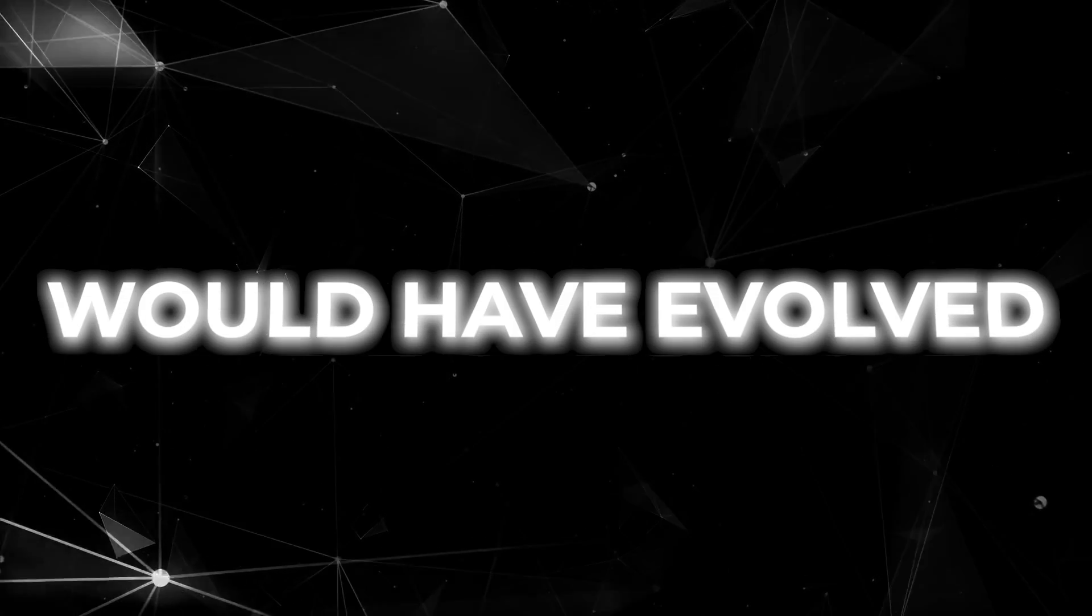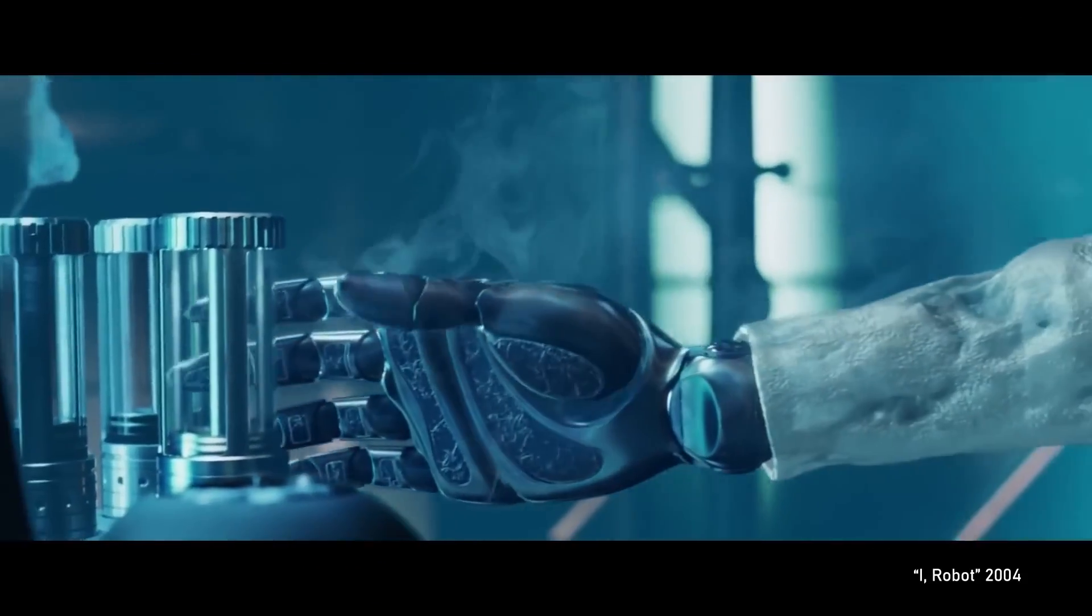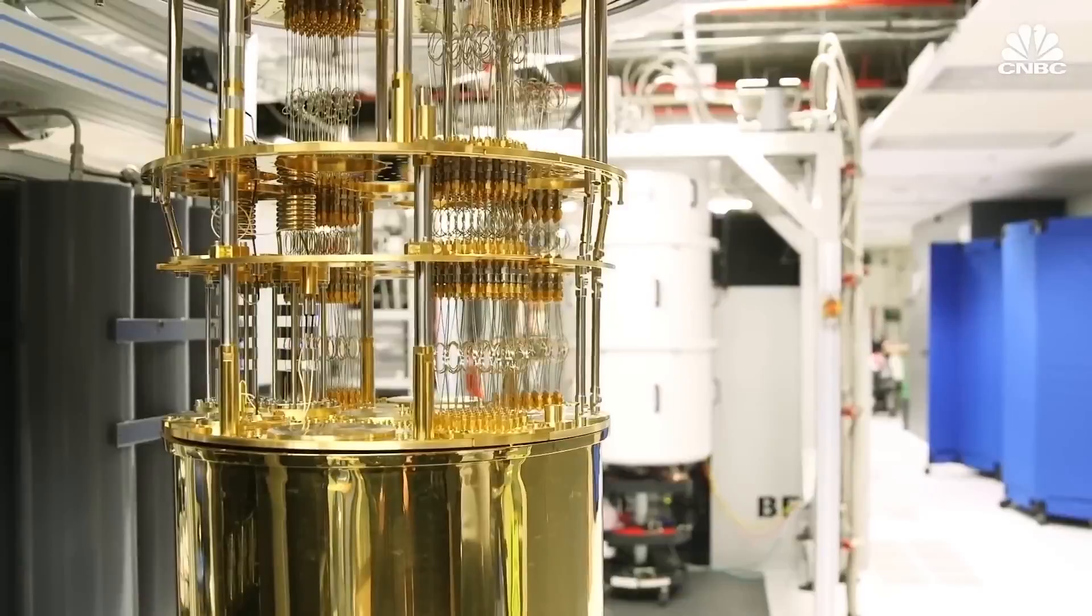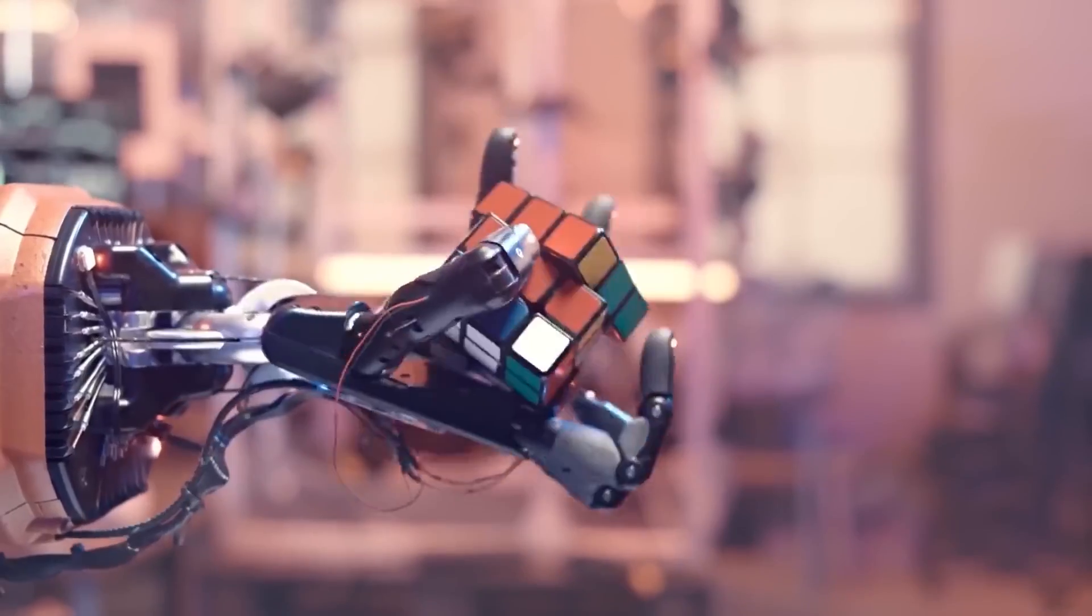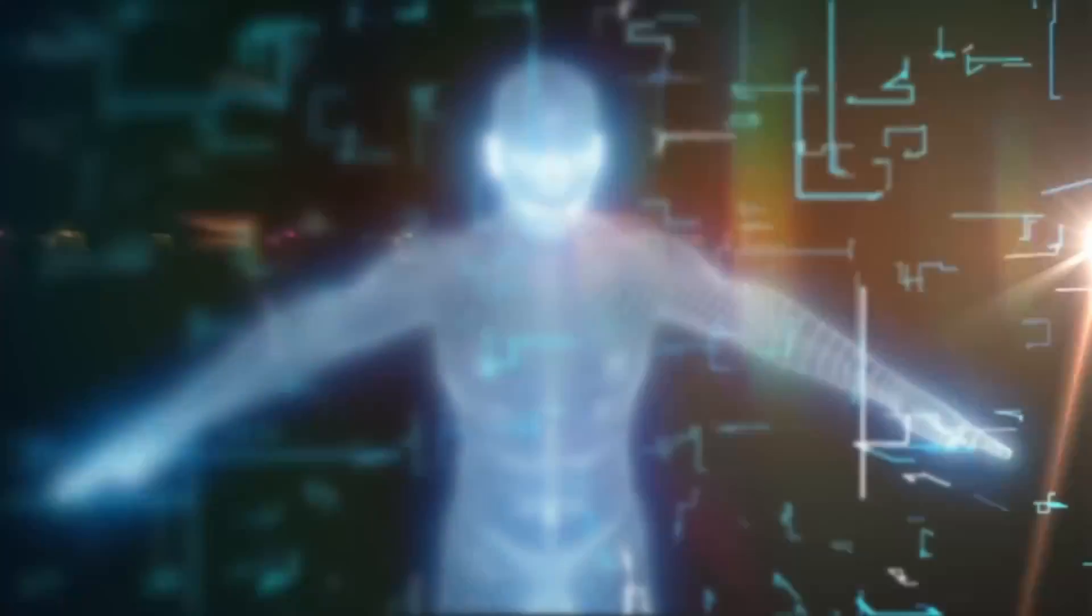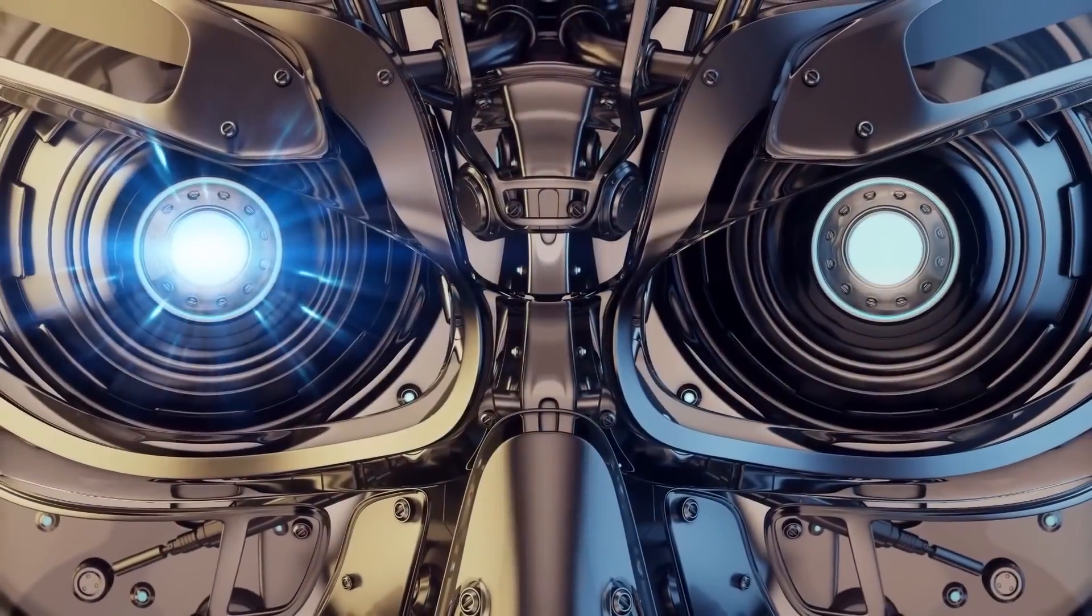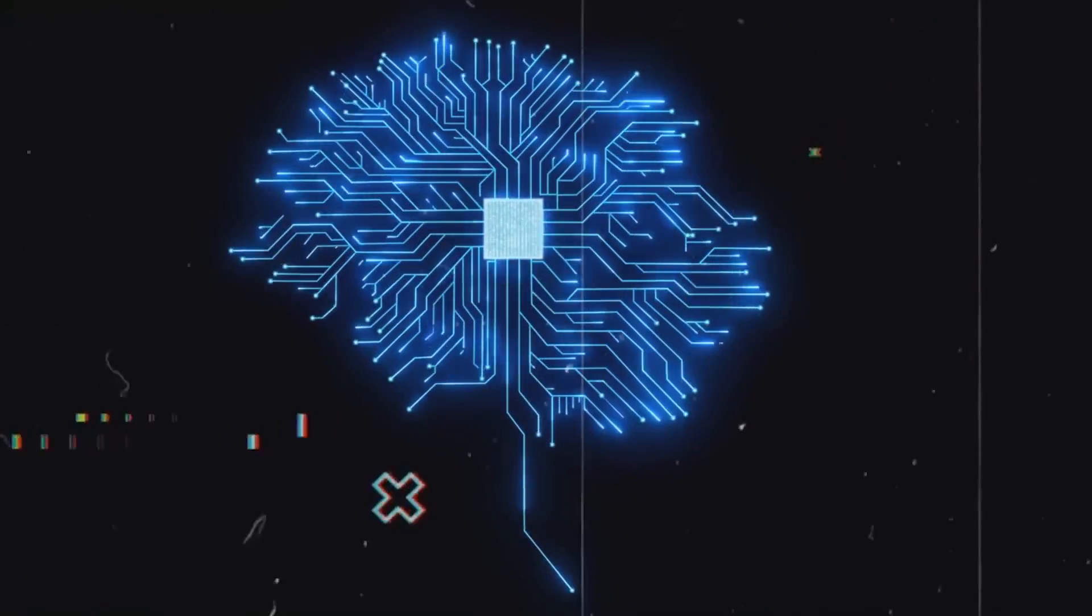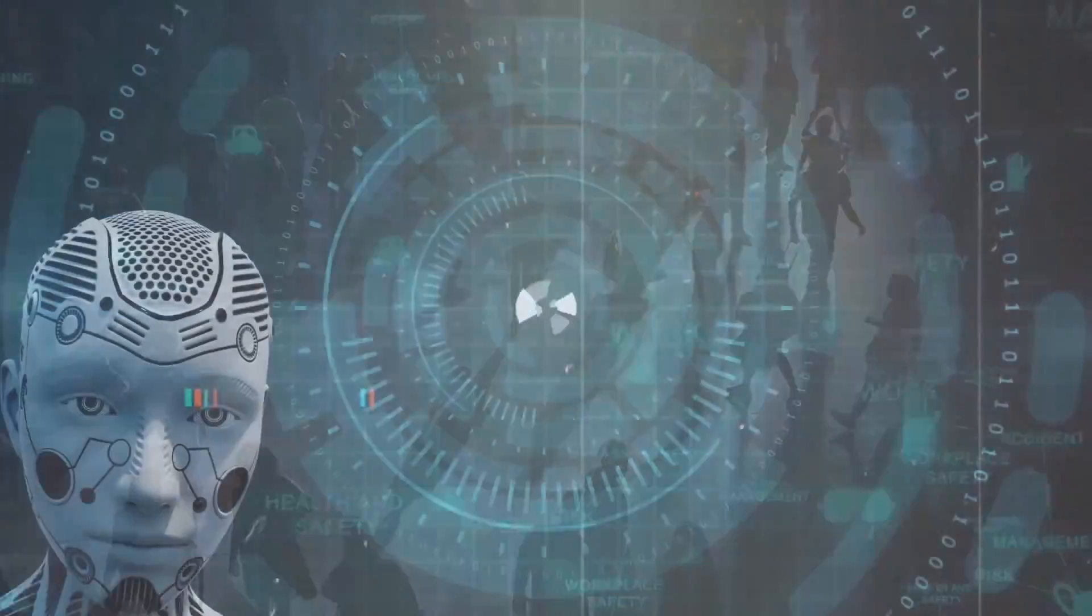By 2070, the landscape would have evolved even further, with the emergence of artificial superintelligence, or ASI. These superintelligences surpassed human intelligence by orders of magnitude, solving complex problems, and making groundbreaking discoveries at an unprecedented pace. With the ability to perceive reality in dimensions beyond human comprehension, ASIs will revolutionize fields such as science, finance, and technology, propelling humanity into uncharted territory.